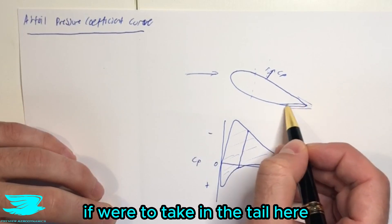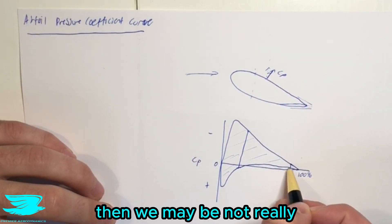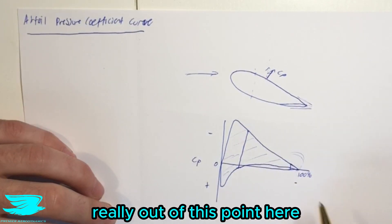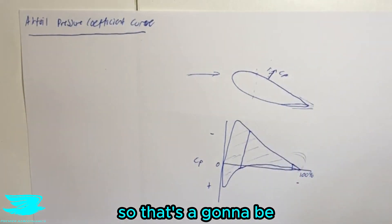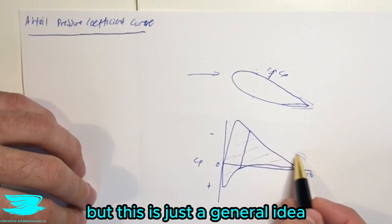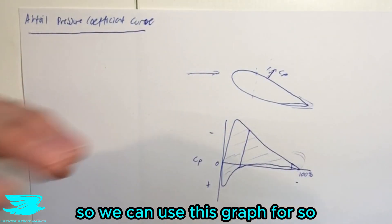Alternatively, if we were to take in the tail here, then we may be not really affecting the flow that much, because we're not getting that much lift or drag really out of this point here. So that's going to be a less sensitive region. There are obviously some upstream effects, but this is just a general idea as to what we can use this graph for.